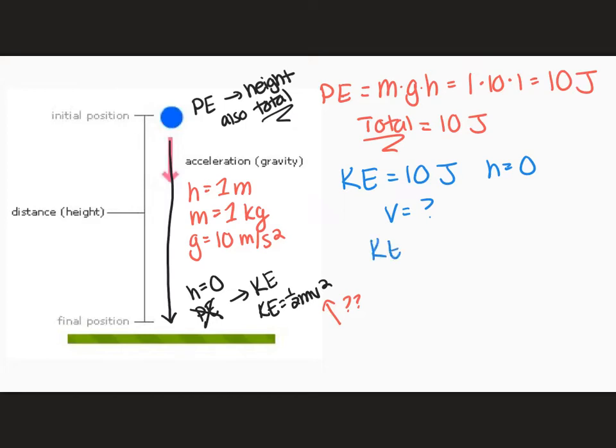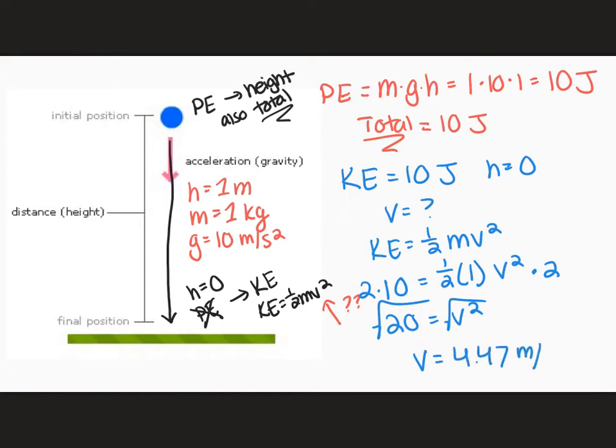So I need to look at my kinetic energy equation, 1 half m v squared. And we're going to plug in some numbers and solve for v. So remember, my kinetic energy at the bottom is 10. Then I have 1 half times my mass and v squared. So to get rid of this 1 half, I can multiply both sides by 2. And then to get my final answer, all I need to do is take the square root of both sides. So this means the velocity at the end is 4.47 meters per second.